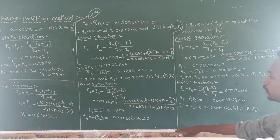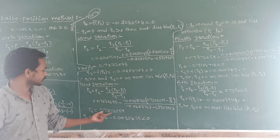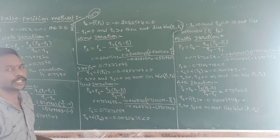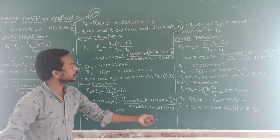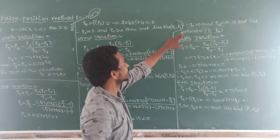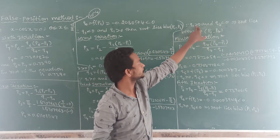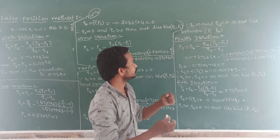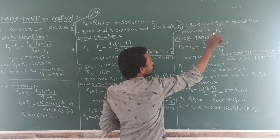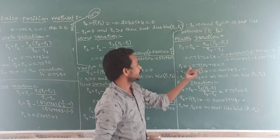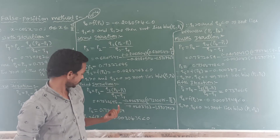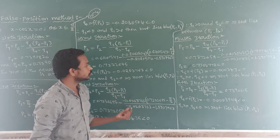Third iteration is finished. We did not get the same decimal up to 4 decimal places, so we have to do the next iteration. For the next iteration, Q4 is less than zero and Q1 is greater than zero. The root lies between P1 and P4. The formula for the fourth iteration gives P5 = P4 − Q4 × (P4 − P1) / (Q4 − Q1). Substituting all the values, we get P5. Comparing P4 and P5, up to two decimal places we got the same.